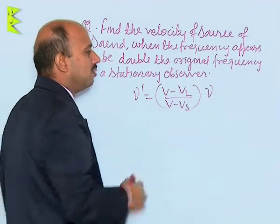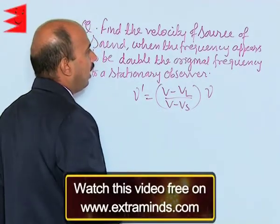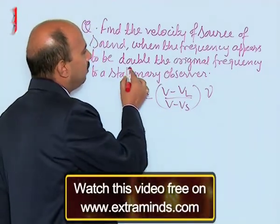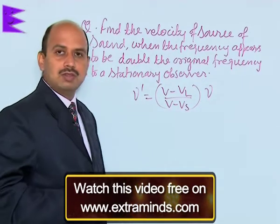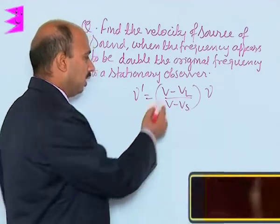Where V L is the velocity of listener, V s is the velocity of source, and the frequency will be appearing here double the original frequency. It means the source is moving towards the stationary listener.